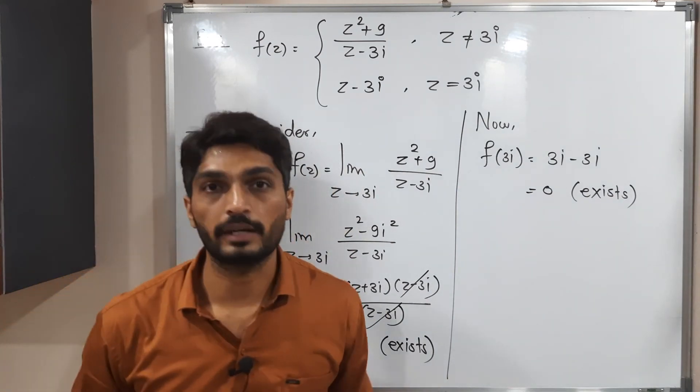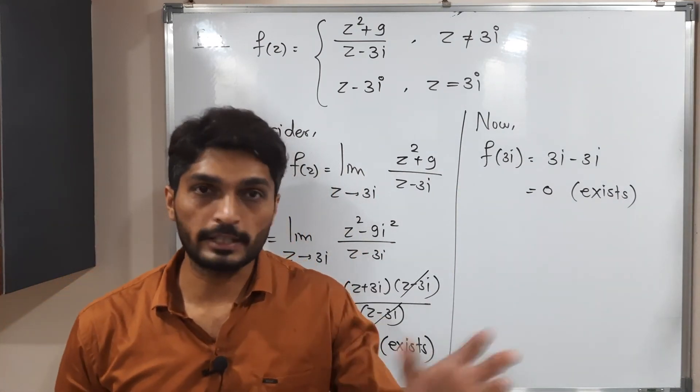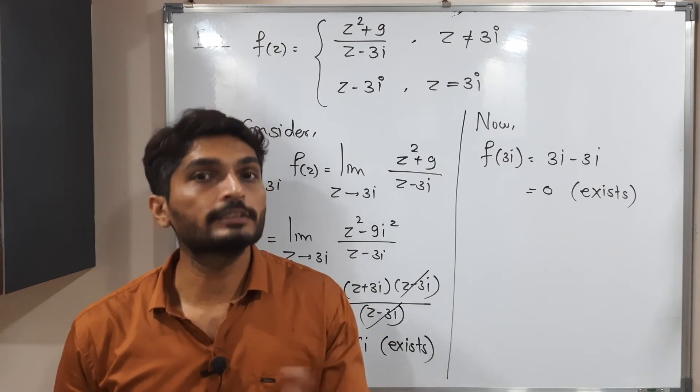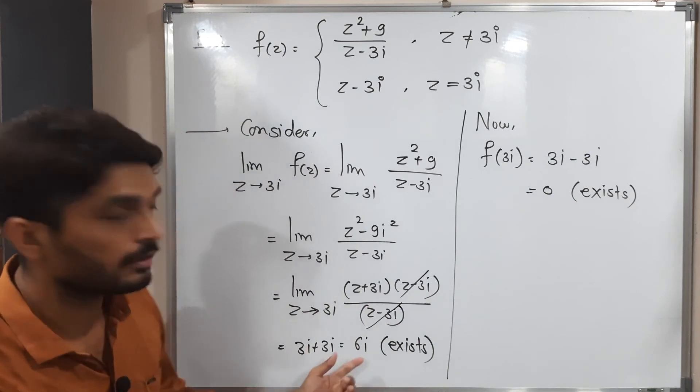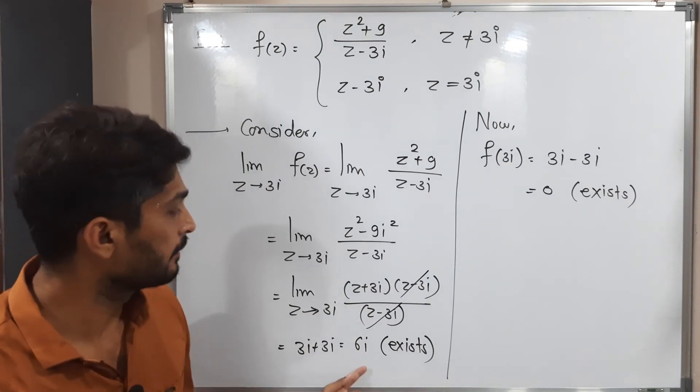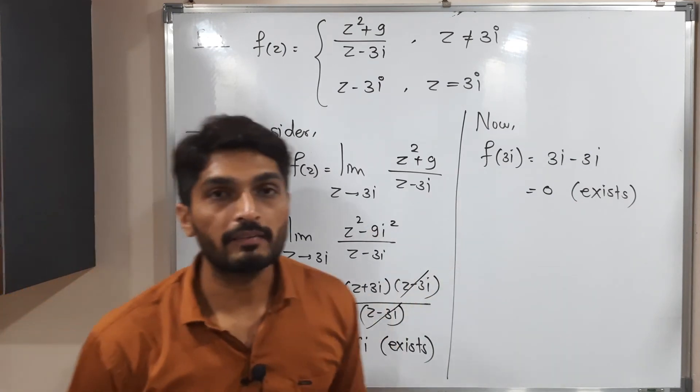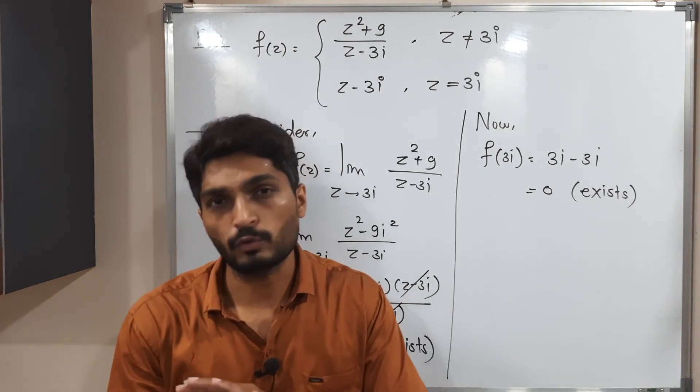Two conditions are satisfied. Limit exists. f of z naught, that is also exists. So the last and very important condition is both of them should be equal. But here, what we are getting here, we are having a value 6i and there we are having 0. So that means both of them are not equal.